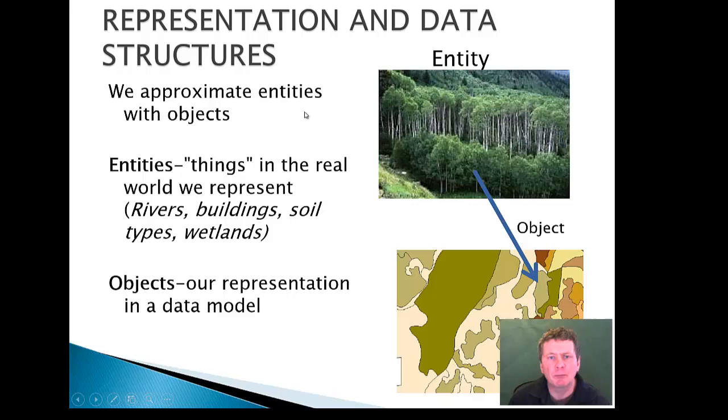We have to approximate the entities with objects. So here's a stand of, I'll call these immature trees and so those next to a stand of mature trees. So here we may develop these into two separate polygons, one being immature trees and the other being mature.